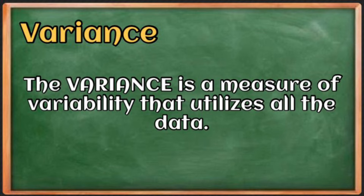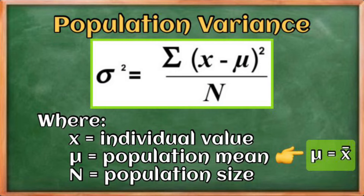Variance is a measure of variability that utilizes all the data. The formula for the population variance is: σ² = Σ(x − μ)² / N, where the Greek letter μ is the mean of the population and N is the population size. Remember that σ² here is just a symbol, so there is no need to square your answer when using this equation.